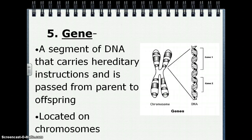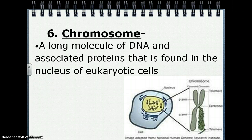A gene is a segment of DNA that carries hereditary instructions and is passed from parent to offspring. Genes are located on chromosomes. A chromosome is a long molecule of DNA and associated proteins that is found in the nucleus of eukaryotic cells.